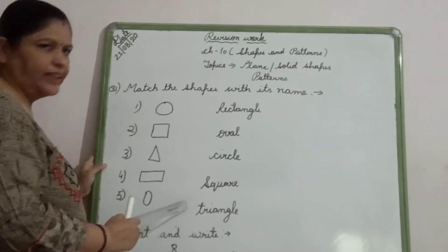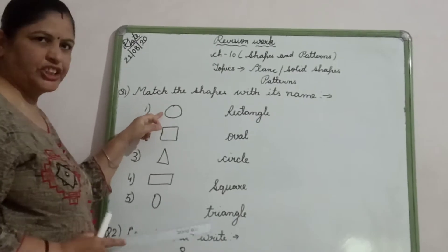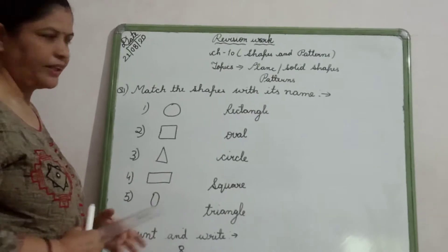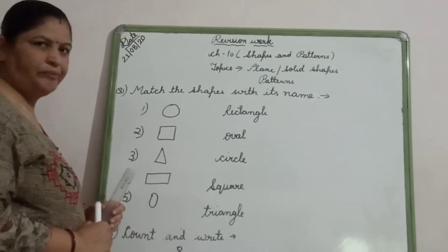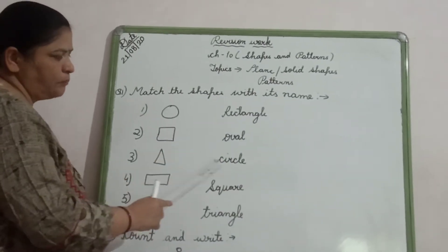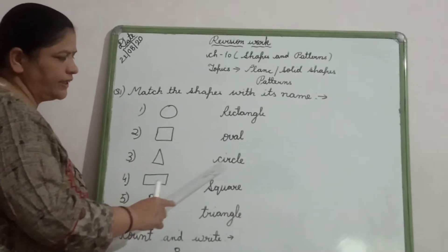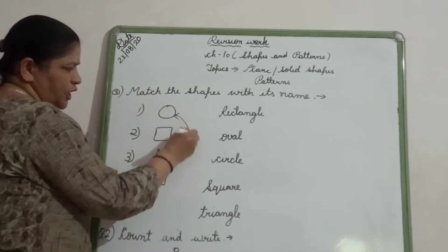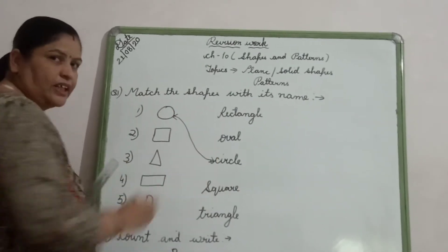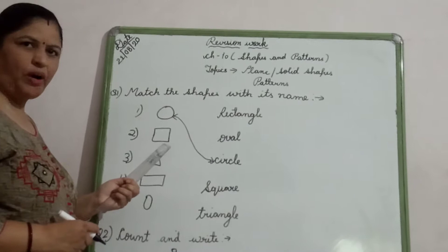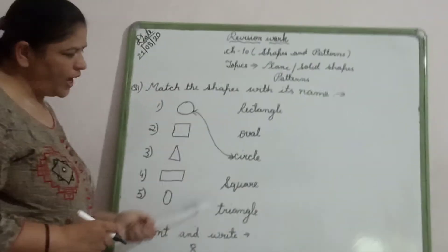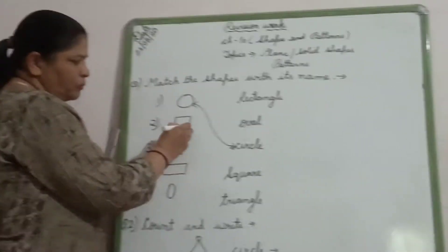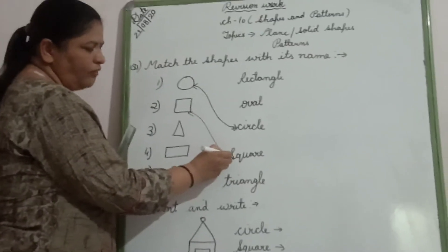Now you have to match with the spelling. The first shape is circle. Please tell me where the spelling of circle is written. In third number the spelling of circle is written — C-I-R-C-L-E. So you have to match the shape with the spelling of circle. Now what is the next one? Square. S-Q-U-A-R-E. So match square with the spelling of square.